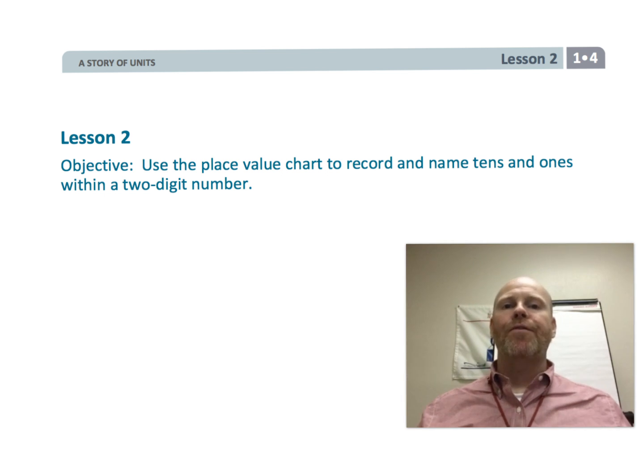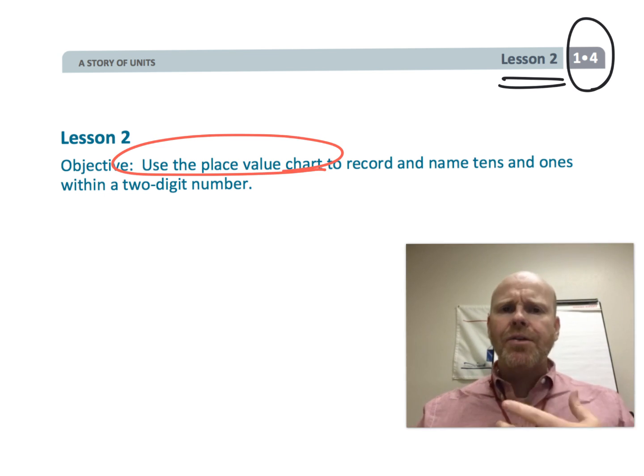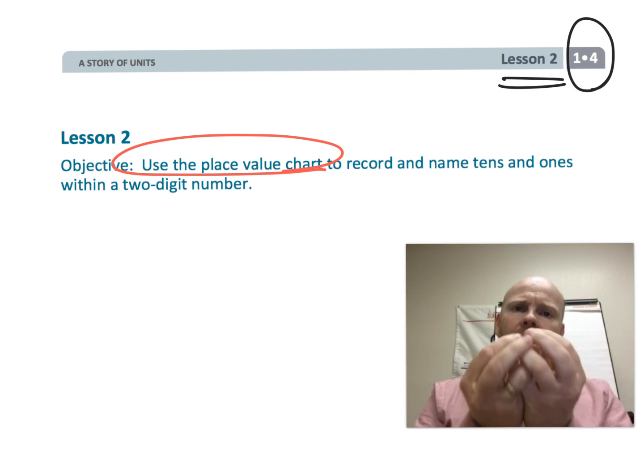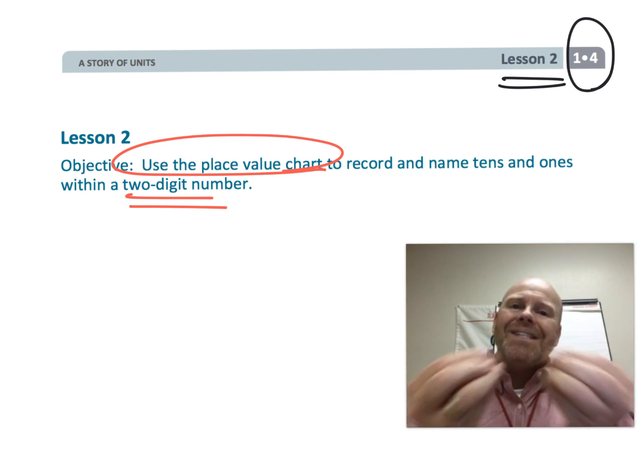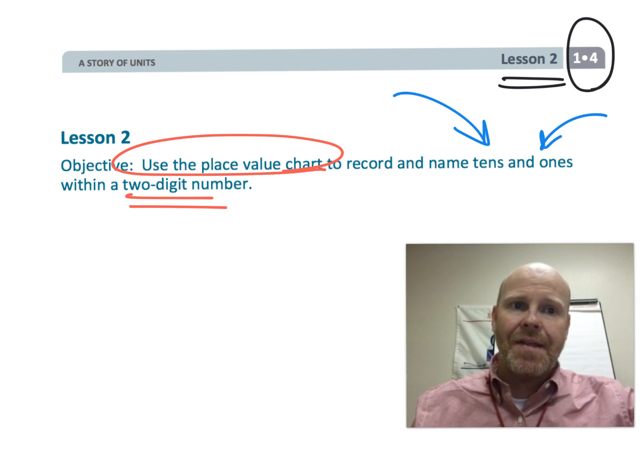This is first grade module 4 lesson 2. In this lesson, students are going to be using an official place value chart in order to understand how a two-digit number can be decomposed into tens and ones. Let's get started.